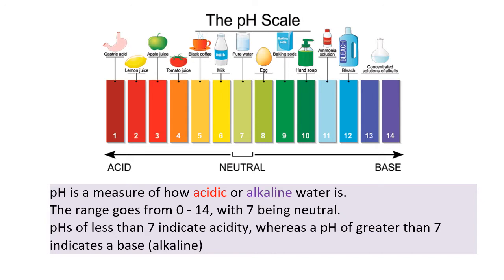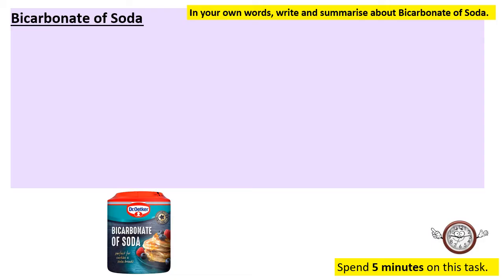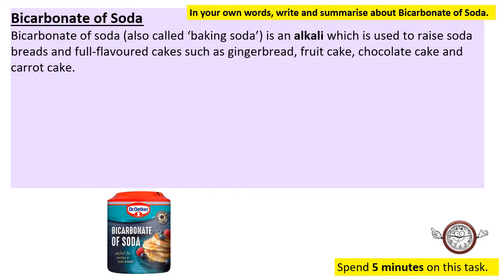That's right — it's the pH scale. The pH is a measure of how acidic or alkaline water is. The range goes from 0 to 14, with 7 being neutral — pure water sits at 7. A pH less than 7 indicates acidity; on the acidic side you have gastric acid, lemon juice, and apple juice. Above 7 indicates a base or alkaline — bleach, ammonia, and concentrated alkalis. This pH scale will later refer to how chemical raising agents work.